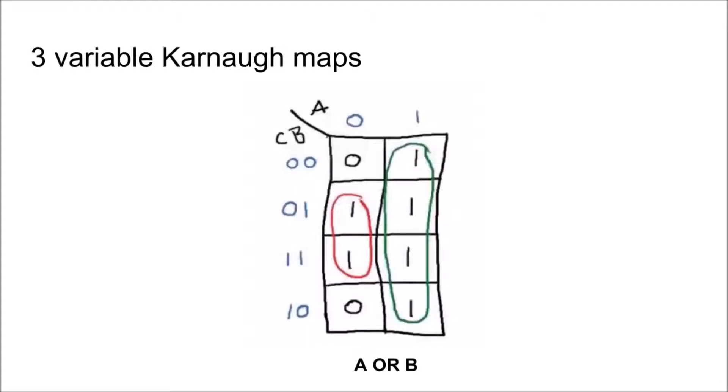Like a two variable Karnaugh map, in a three variable Karnaugh map, the values inside the Karnaugh map are copied from the output column of the truth table, so every input and output can be represented by the Karnaugh map.